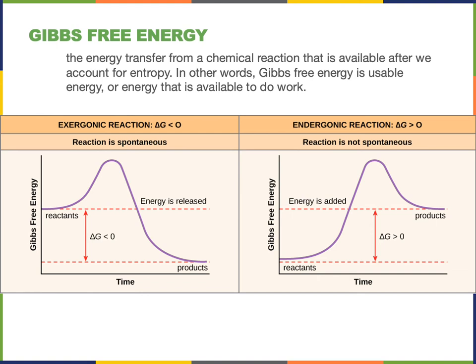In contrast, an endergonic reaction is not spontaneous and does require energy to be added. ATP synthesis is an example of an endergonic reaction — the reactants ADP and inorganic phosphate have a lower chemical potential energy than the product ATP, and therefore energy will need to be added in order to drive the reaction. An endergonic chemical reaction has a positive change in Gibbs free energy, as the products have a higher potential chemical energy than the reactants.